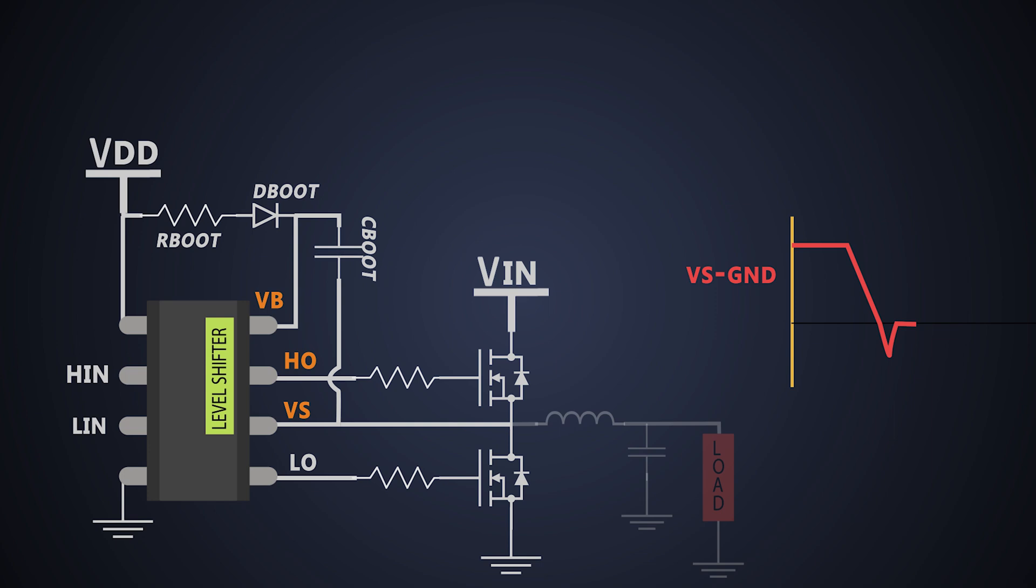The bootstrap capacitor is charged by the bootstrap diode from VDD power source. Since the VDD power source is referenced to the ground, the maximum voltage that can build on the bootstrap capacitor is the sum of VDD and amplitude of the negative voltage at the source terminal.